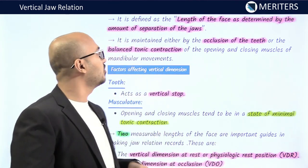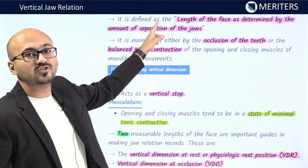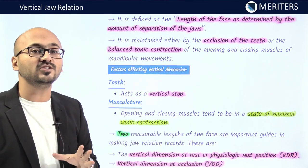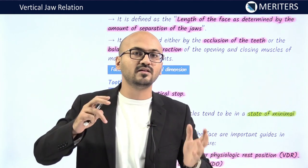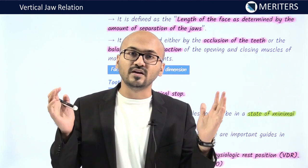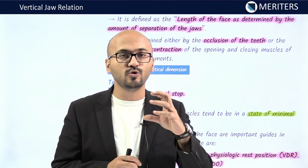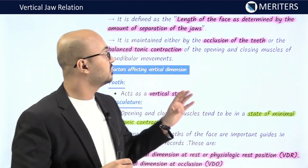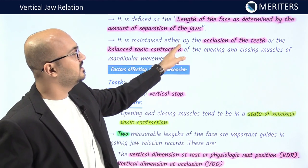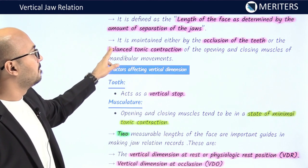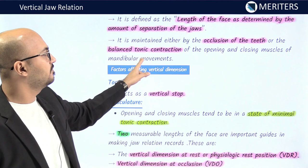Technically, what is vertical jaw relation? It is defined as the length of the face as determined by the amount of separation of the jaws. If the jaws are too far apart, the face will look longer. If the jaws are too close, the face will look shrunken — the middle third of the face will look collapsed. It is maintained either by the occlusion of teeth or by balanced tonic contraction of the opening and closing muscles of mandibular movements.